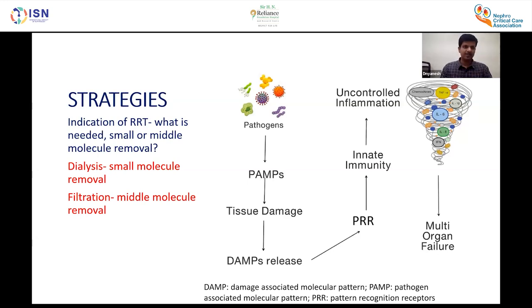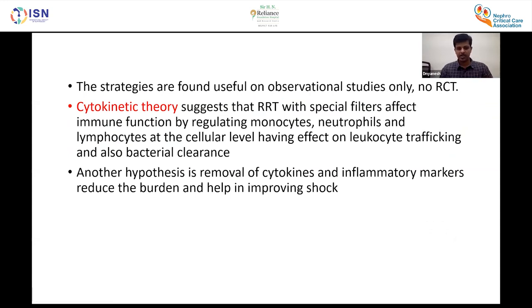Dialysis targets small molecules while filtration targets middle-size molecules. The pathologic cascade shows that pathogens lead to pathogen-associated molecular patterns, causing tissue damage and damage-associated molecular patterns, which activate innate immunity and uncontrolled inflammation. In septic or refractory shock, inflammatory mediators and cytokines deteriorate the patient. Renal replacement therapy alone is not sufficient — adding filters that can remove these mediators alongside RRT would be beneficial.